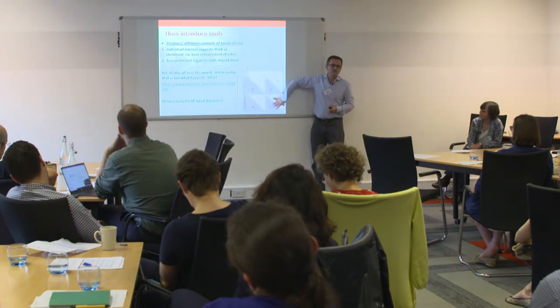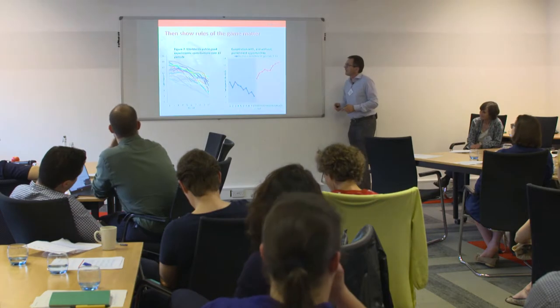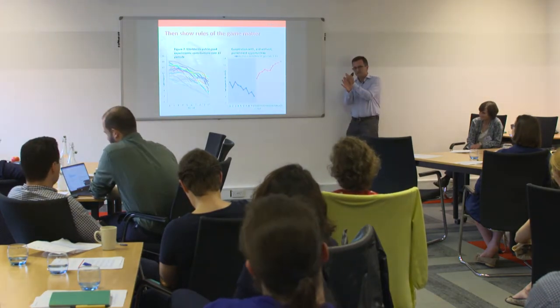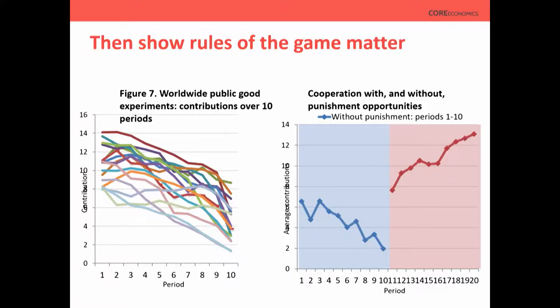We then tell students this theory doesn't explain everything, but it does explain something. Looking at the data from worldwide public-good experiments — contributions over ten periods — even though at the beginning the theory doesn't explain much, over time it does. The reason has a lot to do with reciprocal altruism, which allows us to introduce another theory in this context. Then we go from evidence to theory back to evidence back to theory.